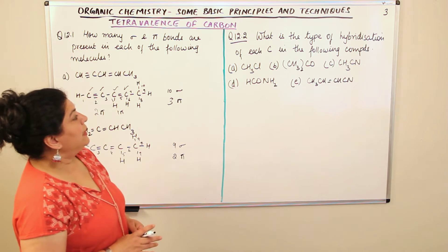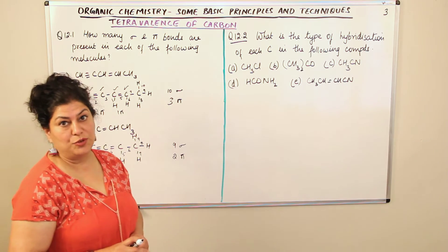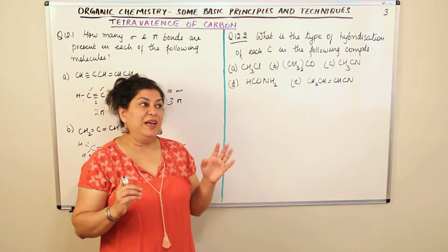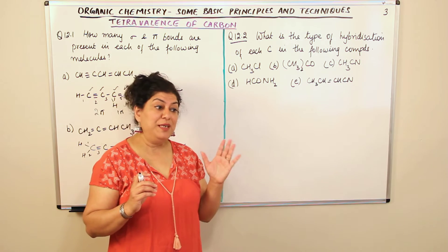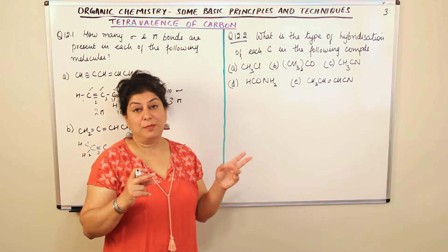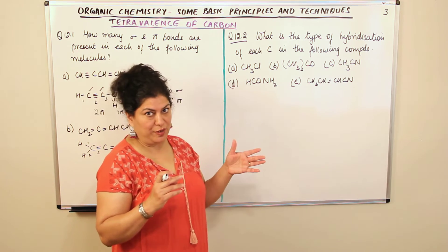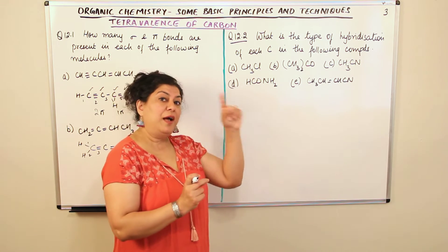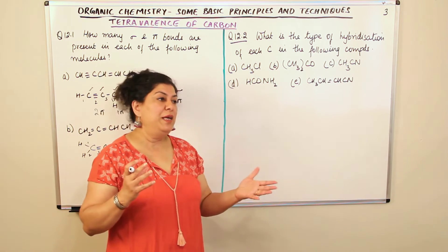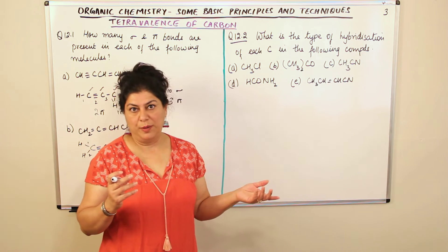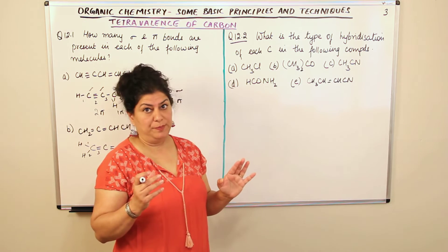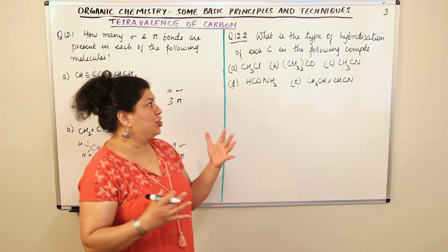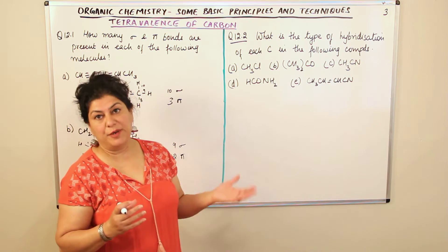Let us come to the next question: What is the type of hybridization of each carbon in the following compounds? Whenever carbon combines with four atoms in single bonds, the hybridization is sp3. If there is one double bond with carbon, it forms three sigma bonds and one pi bond, giving a trigonal planar structure — the hybridization is sp2. If carbon forms a triple bond in the molecule, then that carbon is sp-hybridized. So just by knowing the bonding, you can tell the hybridization of each carbon.